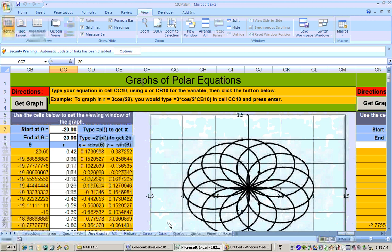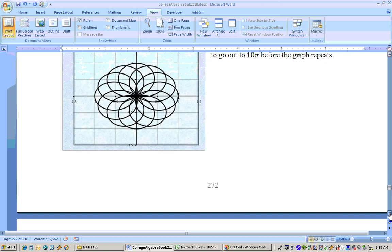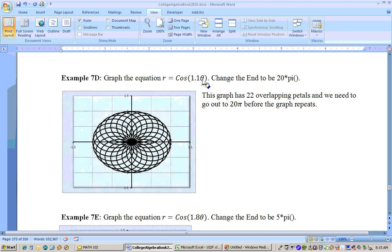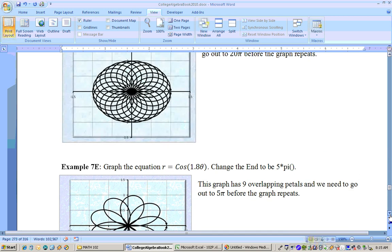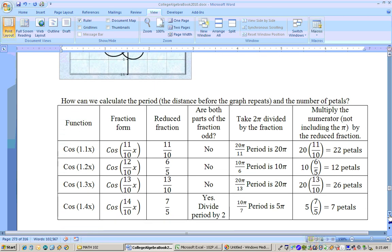But now, how many petals are there? Don't worry, you're not going to have a problem like that. There is, on the last page of this section, it does tell you how many petals are formed. Look at this, 1.1 theta has 22 overlapping petals. 1.8 theta has 9 overlapping petals. And here at the bottom, it tells you how you can determine the number of petals.